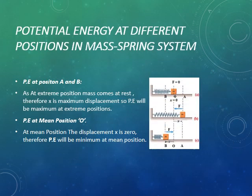Now potential energy at different positions in the mass-spring system. At the extreme positions, the mass comes to rest and displacement is maximum, so potential energy is maximum at the extreme positions. Potential energy equals mgh, where h represents height or displacement — potential energy has a direct relation with displacement. At the mean position, displacement x is zero, therefore potential energy is minimum at the mean position.